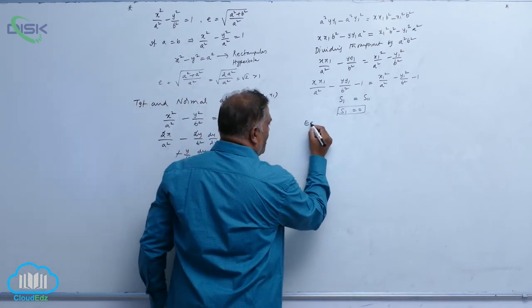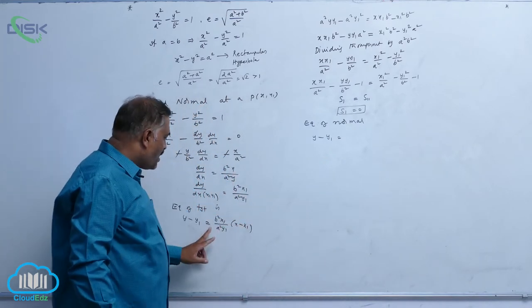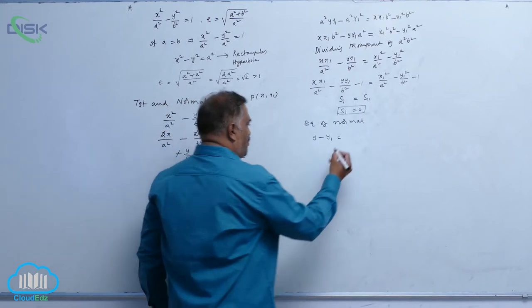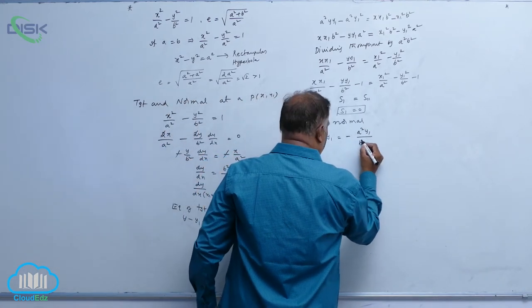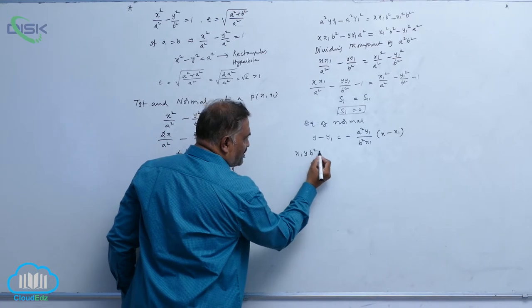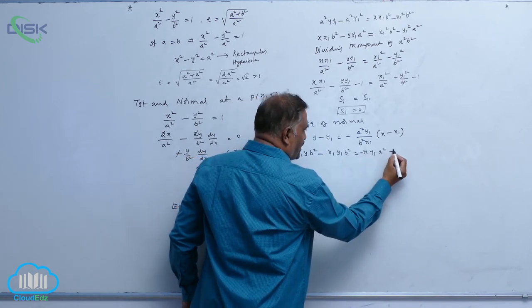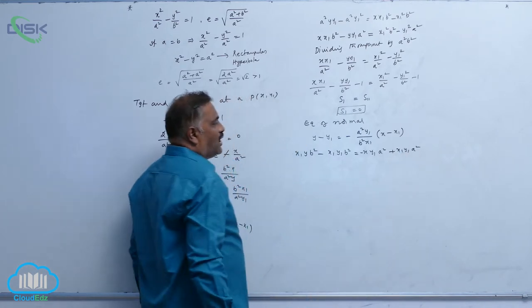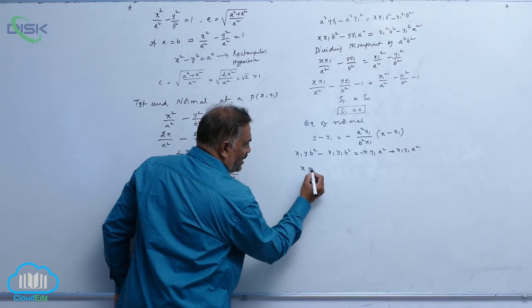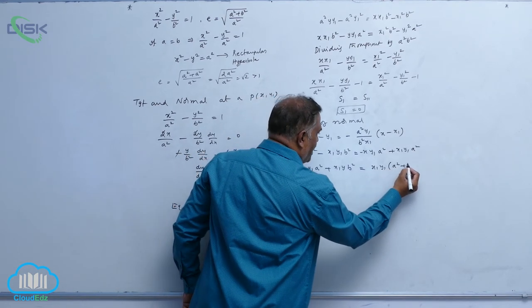Now let us write the equation of normal. The slope of tangent is b²x₁ / a²y₁, so the slope of normal will be its negative reciprocal: −a²y₁ / b²x₁. The equation of normal is y − y₁ = (−a²y₁ / b²x₁)(x − x₁). By cross multiplication: b²x₁y − b²x₁y₁ = −a²xy₁ + a²x₁y₁. Bringing terms together: a²xy₁ + b²x₁y = x₁y₁(a² + b²).